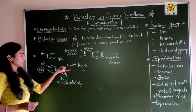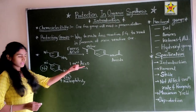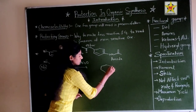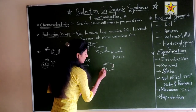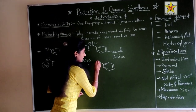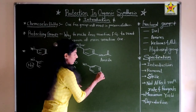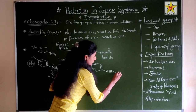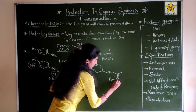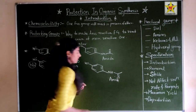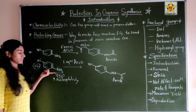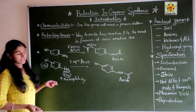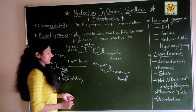That is why, preferably, if we add one equivalent of Ac₂O, then only the NH₂ group will react and form an amide. The OH remains as it is. So here, selectively only one functional group reacts — we can say chemoselectivity is observed.